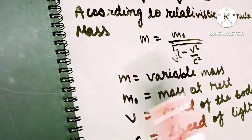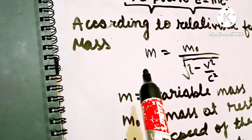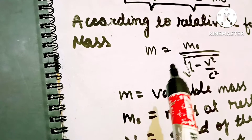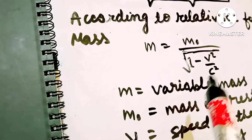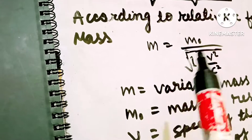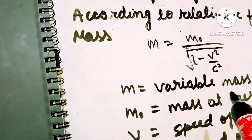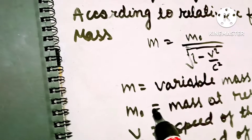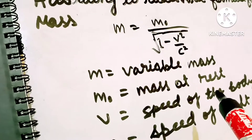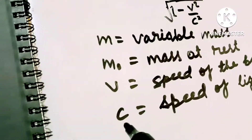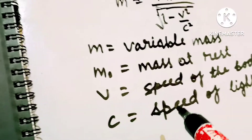According to the relativistic formula for mass, m is equal to m0 upon square root of (1 - v²/c²). Here m is variable mass, m0 is mass at rest, v is the speed of the body, and c is the speed of light.